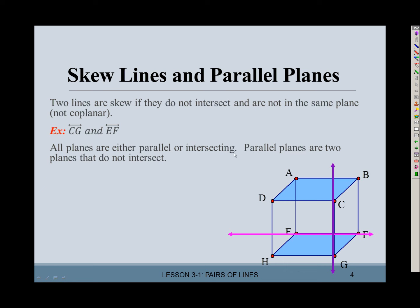Now, all planes are either parallel or intersecting. Parallel planes are two planes that don't intersect. Plane ABC, which is the top of this figure, and plane EFG, which is the bottom — those are parallel planes.